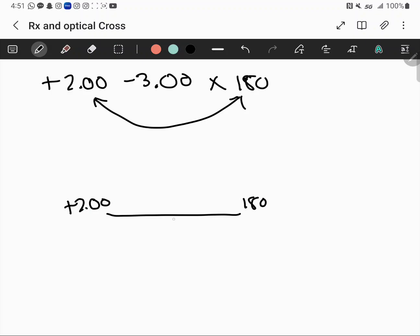Draw 90 degrees away, so this will be 90. You then add these two together: plus 2 minus 3 gives you minus 1. It's as simple as that.